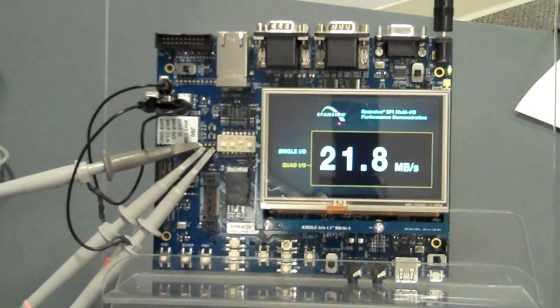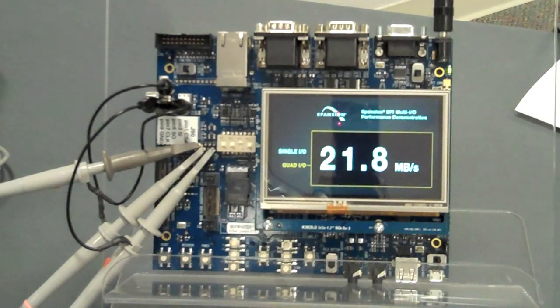If we touch the screen and put it into quad I/O mode, you can see it's between 21 and 22. The way it gets the measurement is it reads the last 16 kilobytes of the flash device five times, and then it takes the peak of those five times and displays that on the LCD screen.